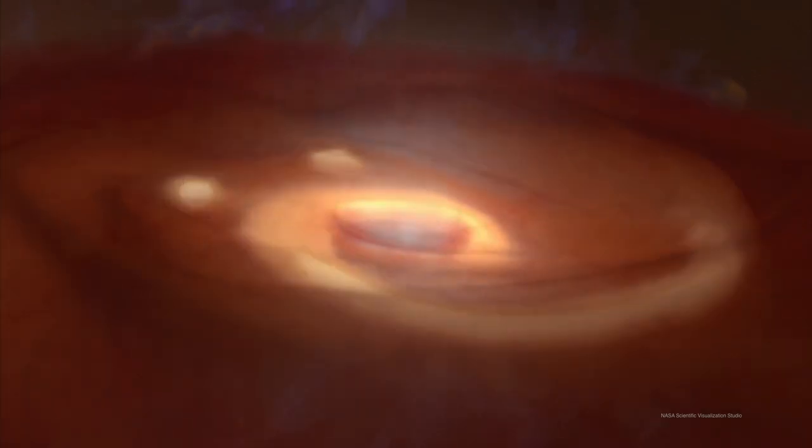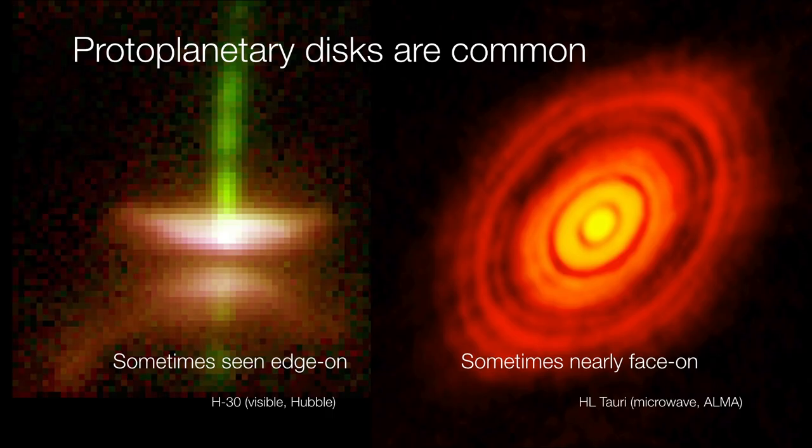And these protoplanetary disks are fairly common. Sometimes we see them edge-on, or sometimes we see them nearly face-on. But when seen at microwave wavelengths, as we have here on the right-hand side of our screen, you can make out the distinctive rings and spoke-like features of this disk. So this is significant because it means that there are protoplanets inside this protoplanetary disk that are beginning to sweep out the concentrations of gas and dust within their orbits.